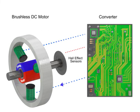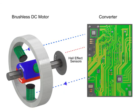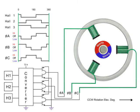The change in sensor state reports back to the converter, which continually switches the phase to the windings to keep the motor turning. The sequence is further explained here when the Hall effect sensors turn on.